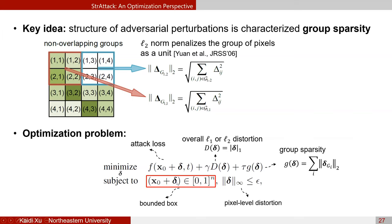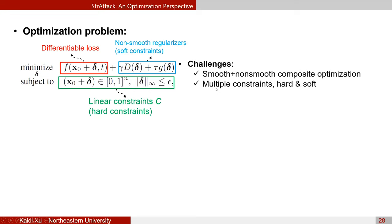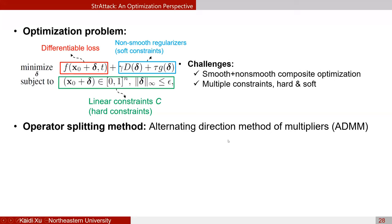This problem is not easy to optimize because it contains a differentiable loss, a non-smooth regularizer acting as a soft constraint, and hard constraints. The challenge is optimizing a composite objective with both smooth and non-smooth terms and multiple constraint types. We introduce the Alternating Direction Method of Multipliers (ADMM) to split the original problem into different stages and terms, enabling efficient and convergent optimization.